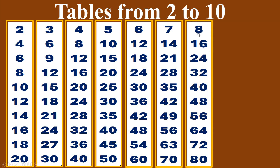Eight times table. Eight ones are eight. Eight twos are sixteen. Eight threes are twenty-four. Eight fours are thirty-two. Eight fives are forty. Eight sixes are forty-eight. Eight sevens are fifty-six. Eight eights are sixty-four. Eight nines are seventy-two. Eight tens are eighty.